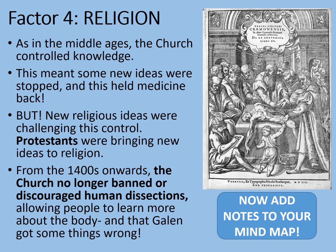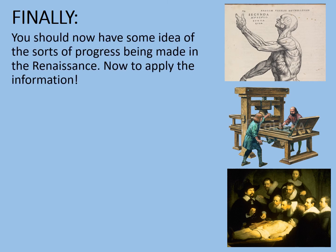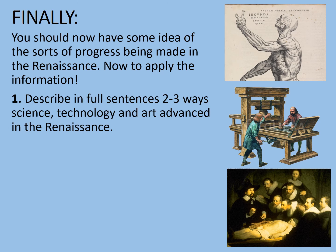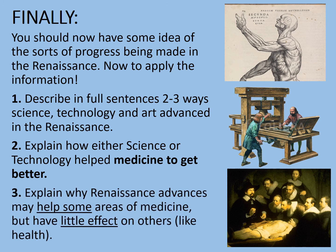Let's draw the information together. You should now have some idea of the sorts of progress being made in the Renaissance in a wider sense, hopefully applying that to a medical context. Task one: describe in full sentences two to three ways that science, technology, and art advanced in the Renaissance, applying this to medical developments where possible. Task two: explain how either science or technology helped medicine to get better. Task three: explain why Renaissance advances may help some areas of medicine but have little effect on others, like health, which we've discussed before. Pause the video while you complete those tasks.